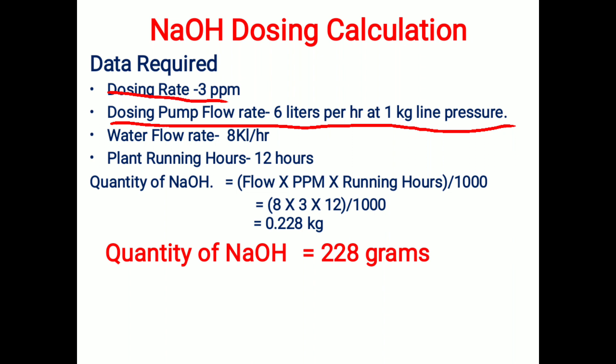Next, the water flow rate — the water flow rate is 8 kL per hour; this is the line flow in which we are going to make the dosing. And the next data is plant running hours — here the plant is running 12 hours in a day.